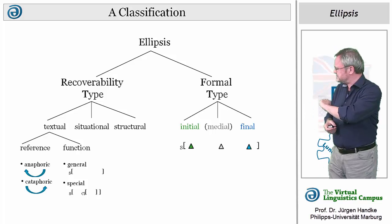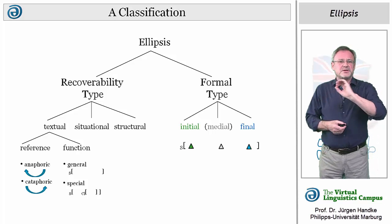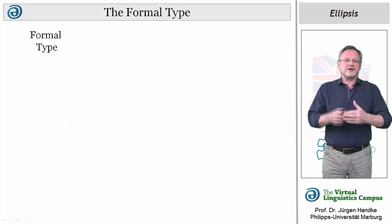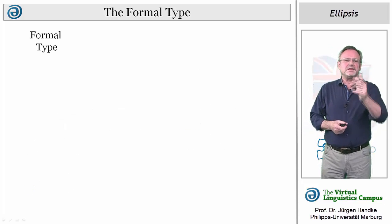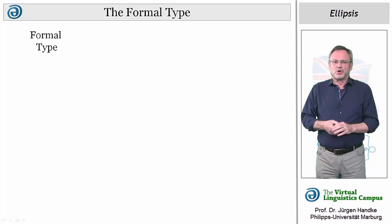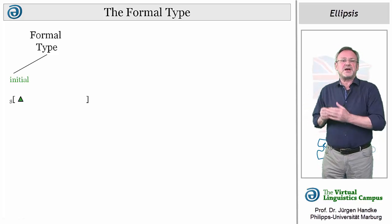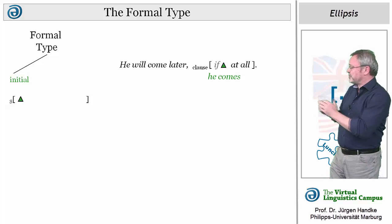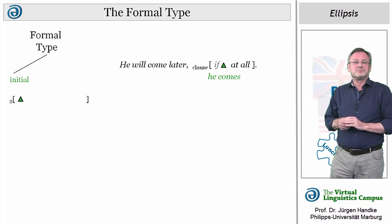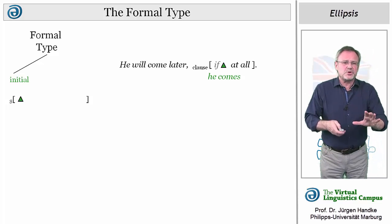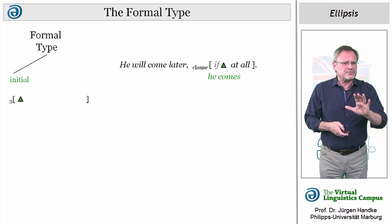Let us look at these types in more detail. Formally speaking, we can define three main categories. Clause initial ellipsis, as in 'He will come later, if at all,' where we can ignore the conjunction 'if' because of its peripheral character.